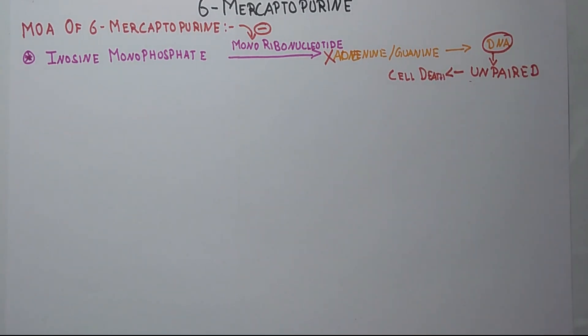So this is the mechanism of action of 6-mercaptopurine. Now coming to the synthesis part of 6-mercaptopurine.